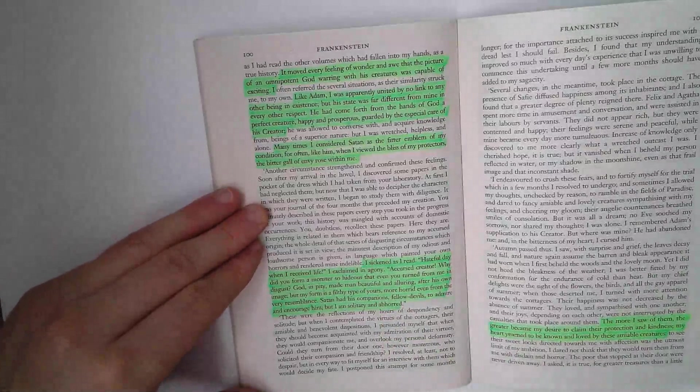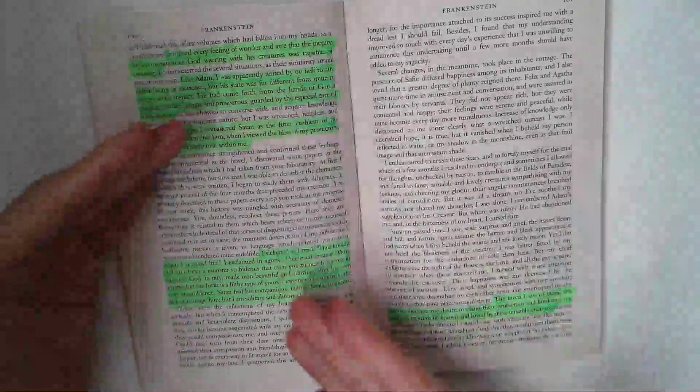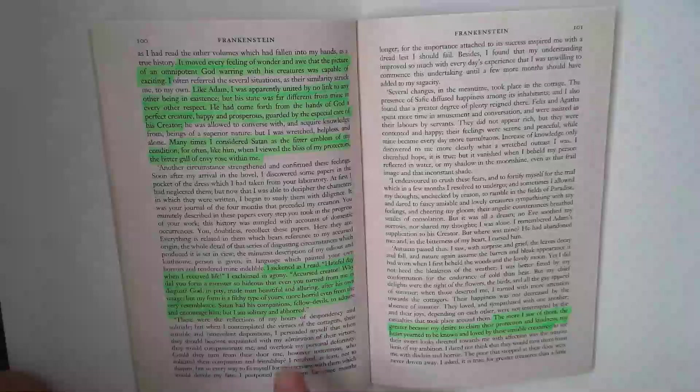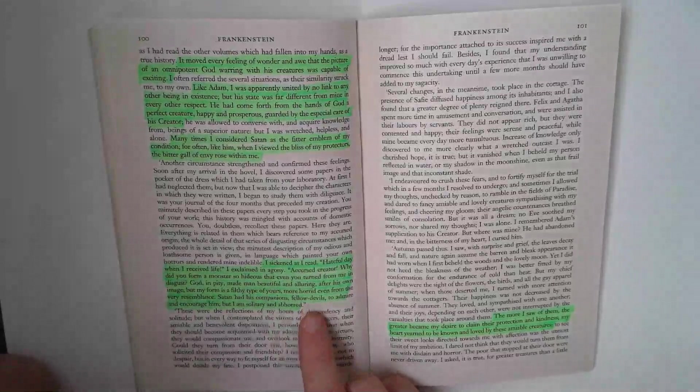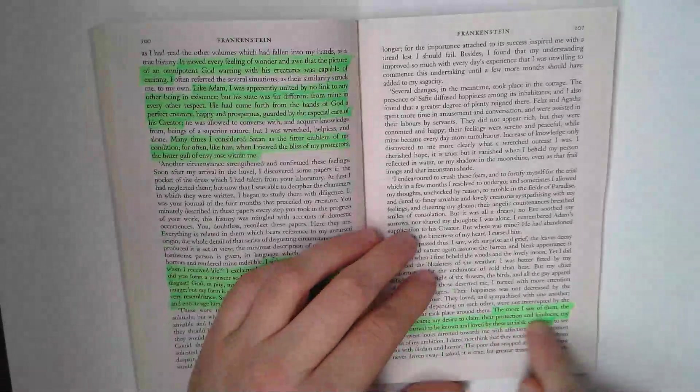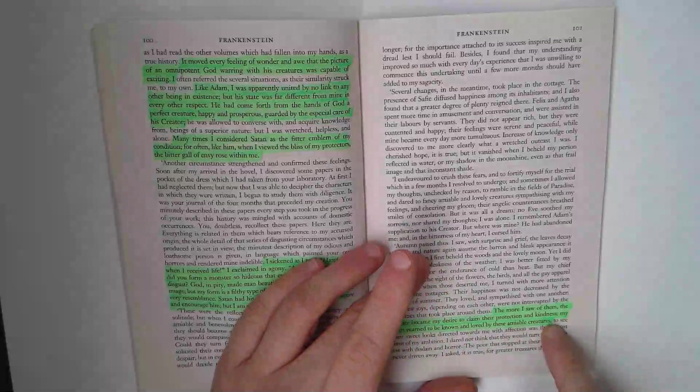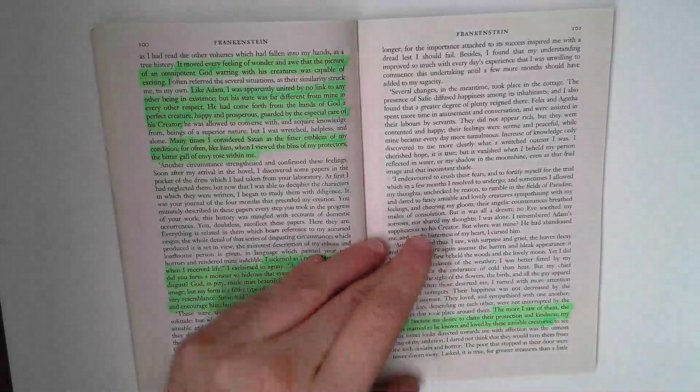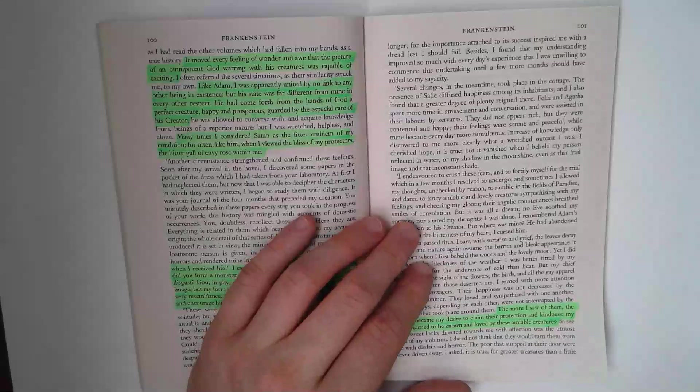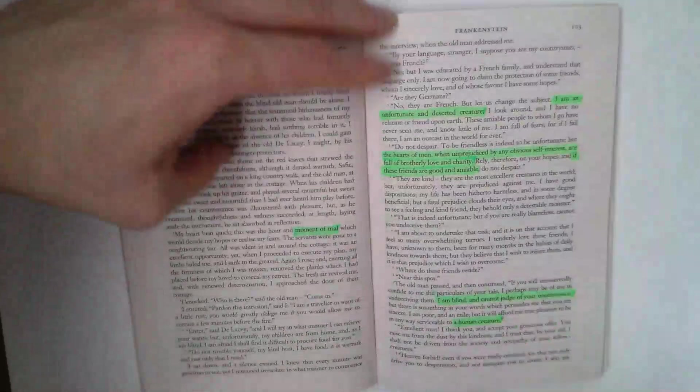He still continues with the family. But ultimately, he's starting now to get to a position, this sense of desperation when he reads these novels. This sense of desperation to be part of something, to have his fellow devils as well. He wants to be part of the DeLacy family. The more I saw of them, the greater became my desire to claim their protection and kindness. My heart yearns to be known and loved by these amiable creatures. There's a really poignant nature to the scene because this is what the creature wants. He wants companionship. He yearns for companionship and protection.